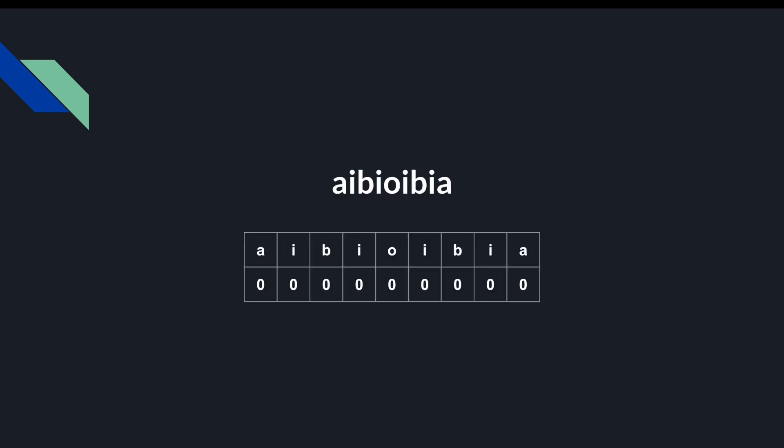Let's take a look at this string. The array below it represents the length of a palindrome centered at that letter. For example, when we take a look at the letter a, we check what is the longest palindrome centered around this a. Since a is the leftmost element, we can't really make a palindrome longer than length 1, so we populate the first element of the array with 1. Then we take a look at the i — we try to expand our palindrome with i as the center, but the neighboring letters do not match. So our palindrome centered at i is 1.